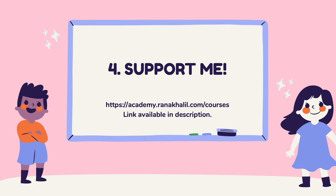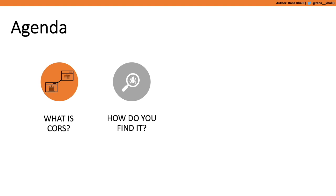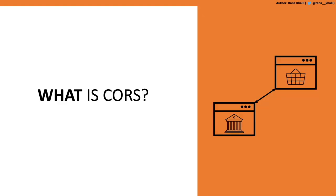The agenda for today is to first cover the technical details behind CORS attacks — what is a CORS vulnerability or CORS security misconfiguration, what are the different types, how common are they, and so on. Next we'll cover how to find CORS vulnerabilities from both a white box and a black box perspective. Then we'll cover how to exploit them once found, and finally we'll cover techniques to prevent or mitigate CORS attacks.